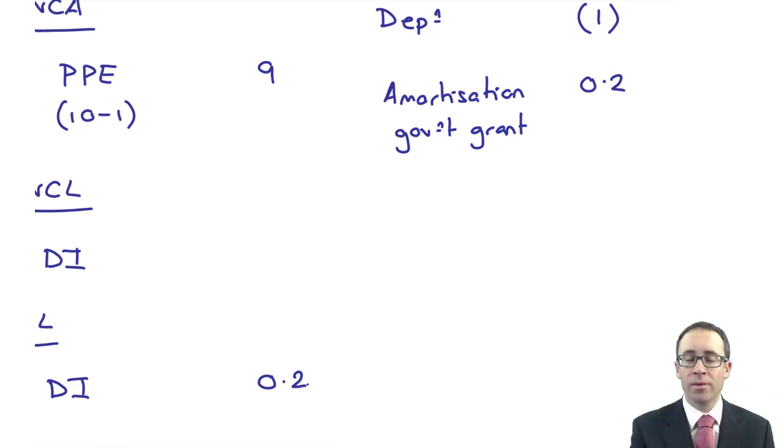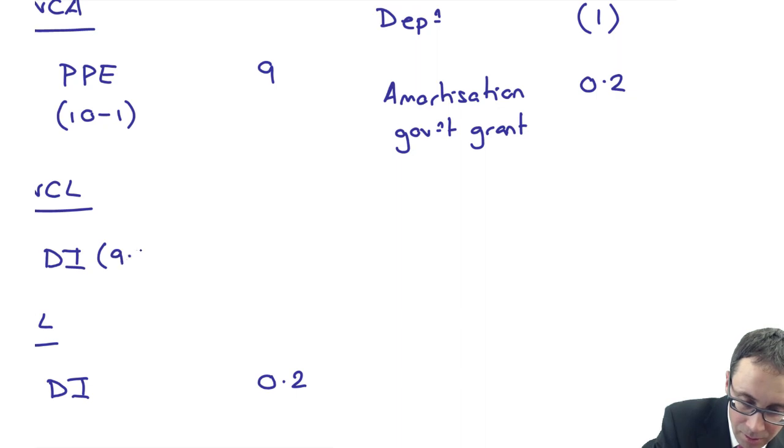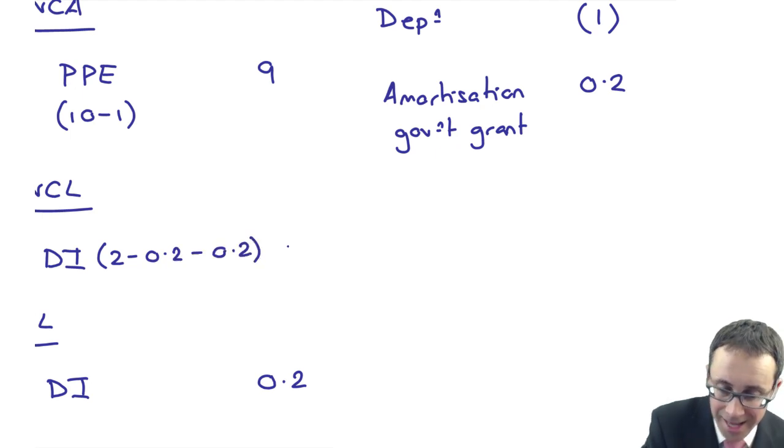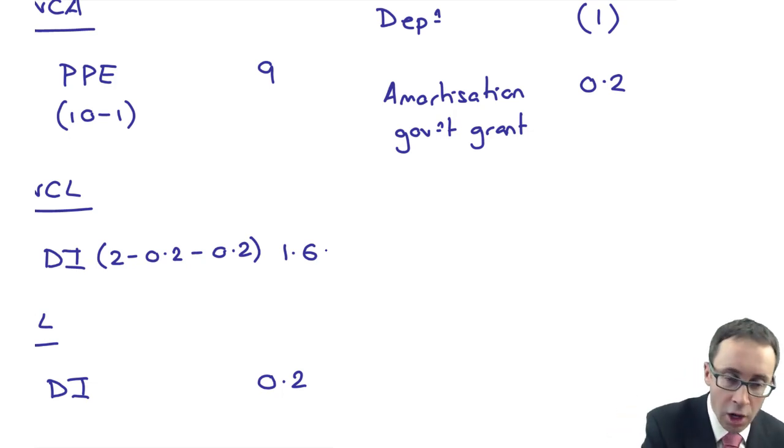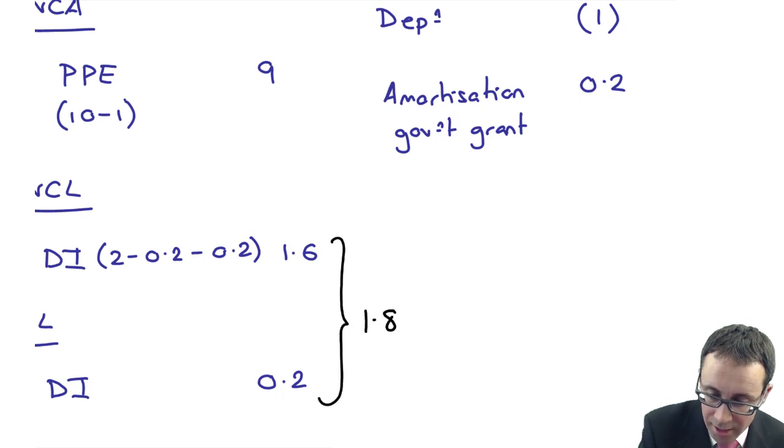0.2 million's already been released. So 2 less 0.2 less the current liability element. So is that 1.6 million. So don't forget at the end of the first year, 0.2 million has been released. So the total deferred income to be released over the remaining 9 years is 1.8 million.